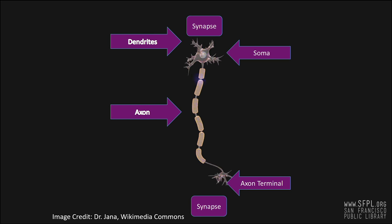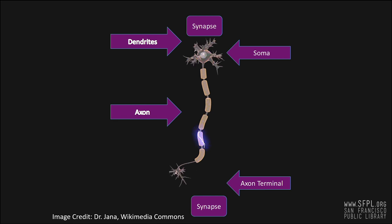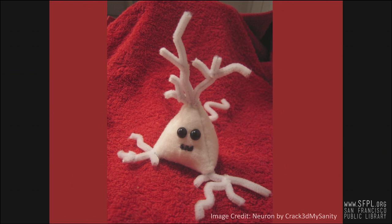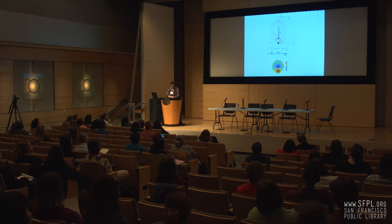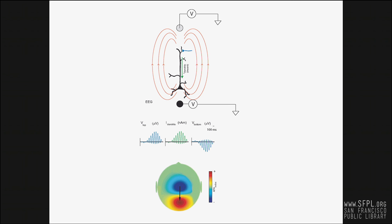Brainwaves are generated by the synchronous firing of neurons known as pyramidal neurons — a special type of neuron that lives in the brain's cortex. They fire synchronously in neural ensembles. Because the neuron's dendrites all point in the same direction, their synchronized activity creates an electric field that can be measured from the scalp. The instrument that does this measuring is the electroencephalogram, or EEG.